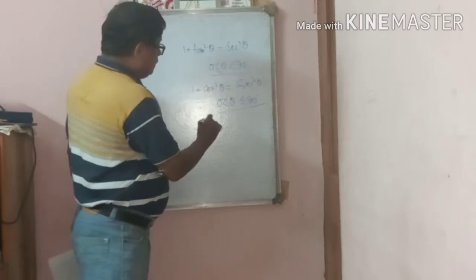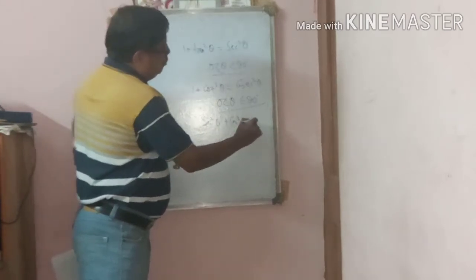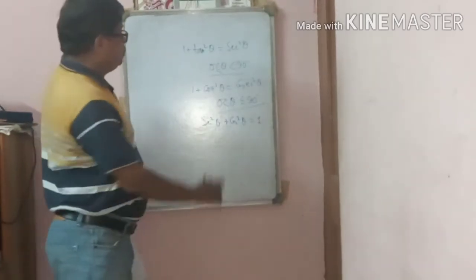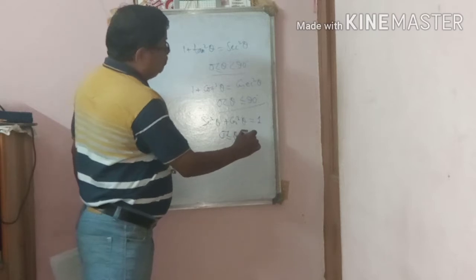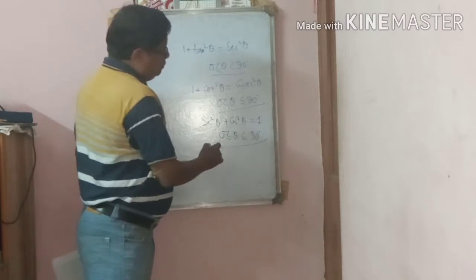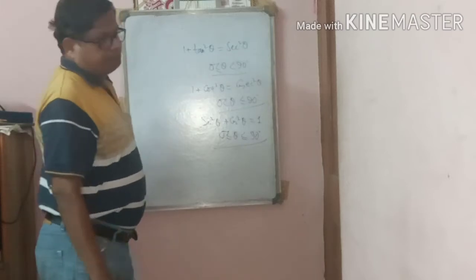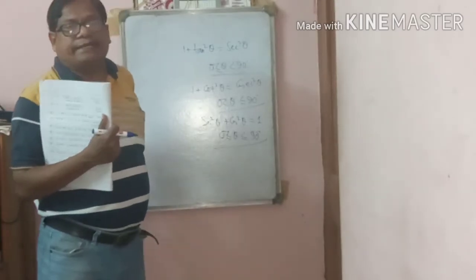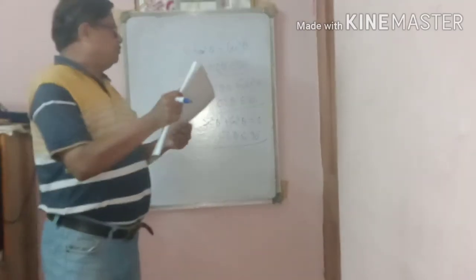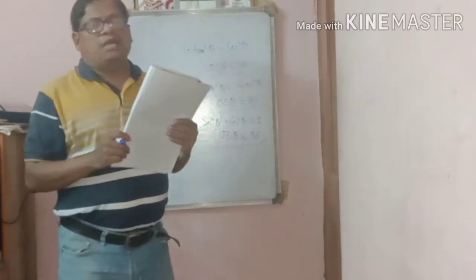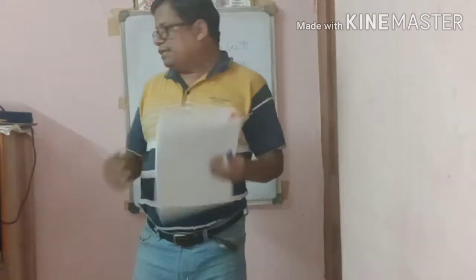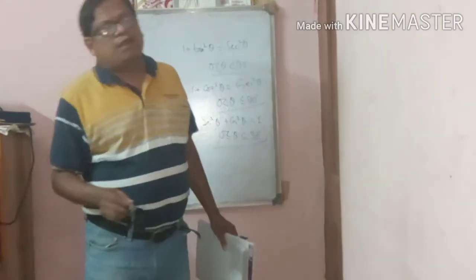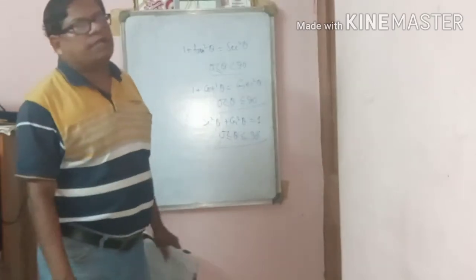And sin²θ + cos²θ = 1 holds for all values of θ, including 0 ≤ θ ≤ 90°. Now in the first chapter on Trigonometric Identities, I will teach a few important sums. You all know the trigonometric ratios: sinθ, cosθ, tanθ — that is the trig ratio — already discussed in the previous class.